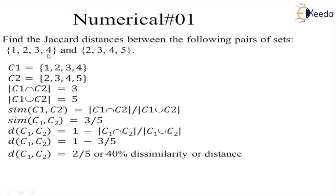We will find out the intersection and union. Intersection means the elements which are common. So here 2, 3, 4 from set 1 and 2, 3, 4 from set 2. So intersection is 3 elements, and union between C1 and C2 is 5 elements.